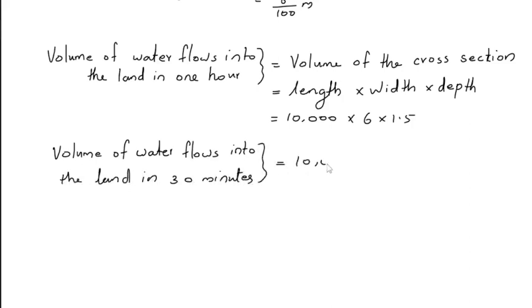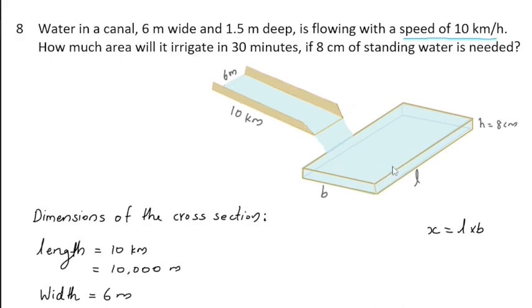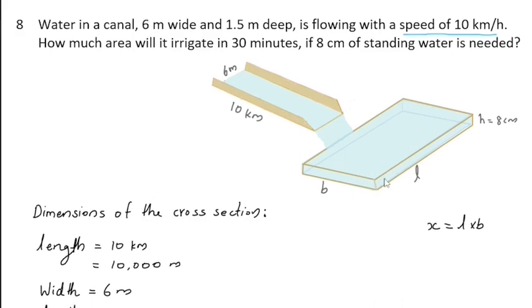That is 10,000 times 6 times 1.5 times 30 divided by 60. Cancelling the zeros and multiplying together, we get 45,000 cubic meters. So in 30 minutes, 45,000 cubic meters of water will flow into the land. After 30 minutes, the volume of standing water on this area is equal to the volume of water that flows through this cross-section in 30 minutes.